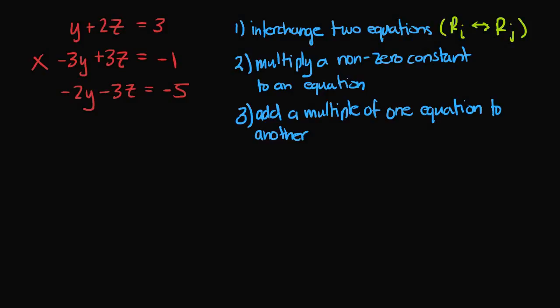I'm using the character r to represent the row on which the equation sits. This r notation will be helpful when we get into matrices. For simplicity, when I say r1, I'm referring to equation one. If I say r3, I'm referring to equation three. So when we interchange two equations, we simply switch the two rows — if I switch r1 and r2, I just rewrite the equations in switched positions.